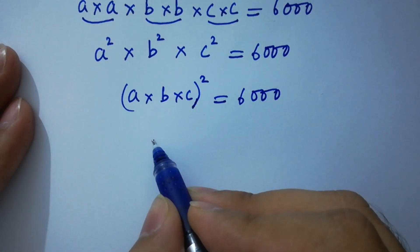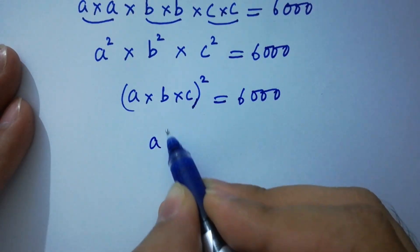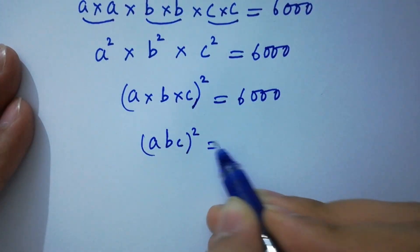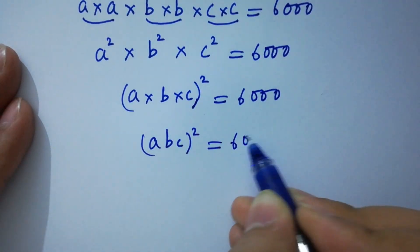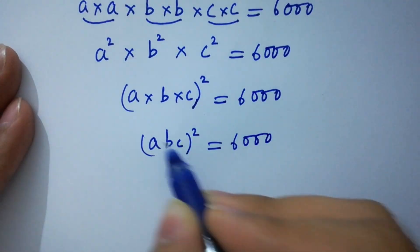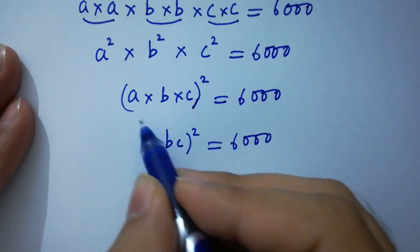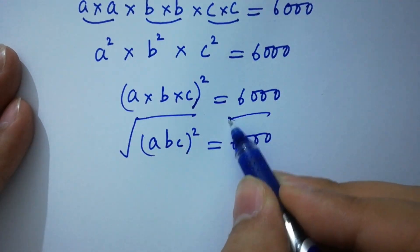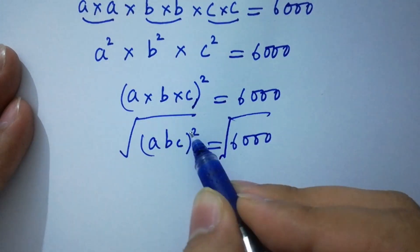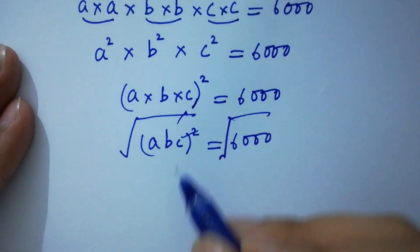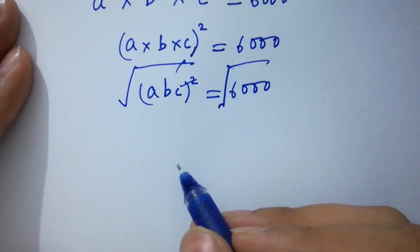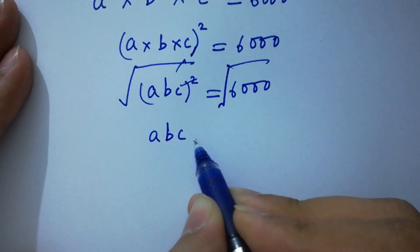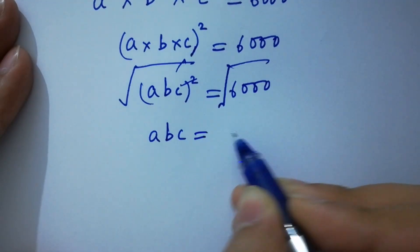We have (abc) squared equal to 6000. Taking the square root on both sides, the squares cancel and we have abc equal to the square root of 6000.